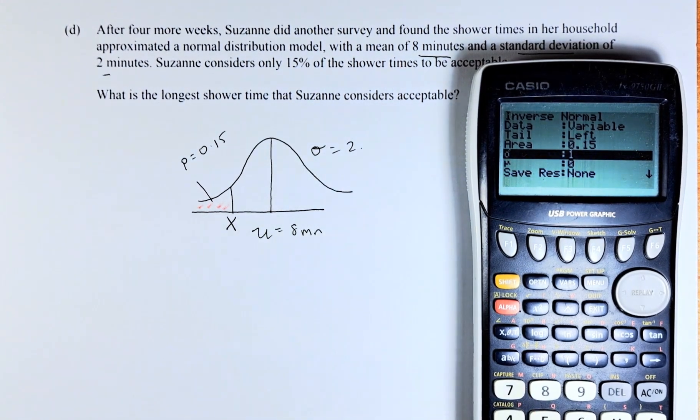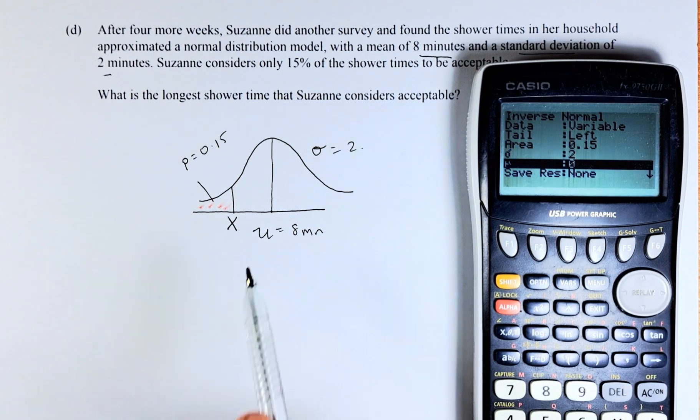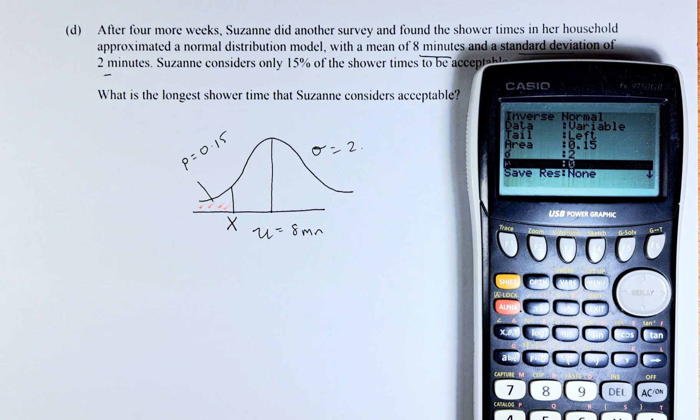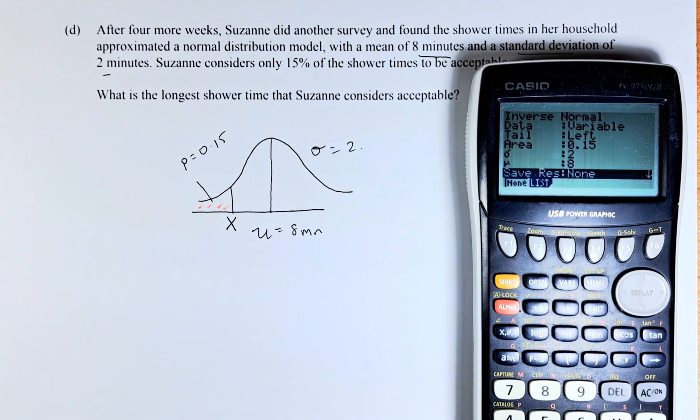Sigma is the standard deviation which is 2. Put it at 2 there. Execute. And the mu is the mean which is 8 minutes. So we put 8 there. Press the execute button.